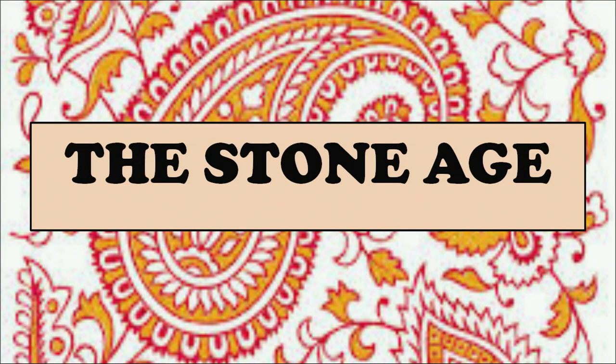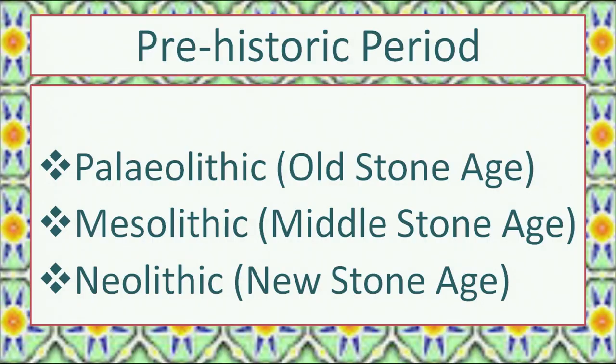The prehistoric period is that period of our ancient past for which we do not have any written records. Therefore, to know about this period we have to depend upon material found in archaeological excavations. The earliest man living during this period made tools and implements of stone, which helped him hunt and gather food. Since the earliest tools used by humans were made of stones, this phase of human development is also known as the Stone Age. The term Paleolithic is derived from the Greek word 'paleo' meaning old and 'lithic' meaning stone, so the Paleolithic age refers to the Old Stone Age.